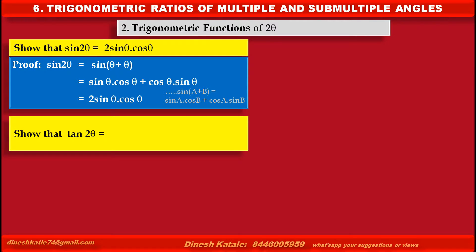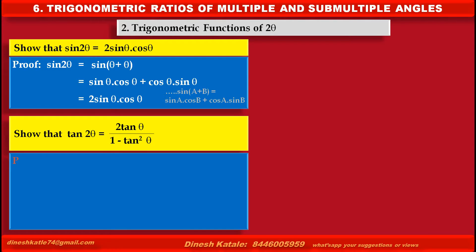So that tan 2 theta is equal to 2 tan theta upon 1 minus tan square theta. Proof. tan 2 theta equals tan theta plus theta. By using the formula tan A plus B equals tan A plus tan B upon 1 minus tan A tan B, we can write this as tan theta plus tan theta upon 1 minus tan theta into tan theta, since the values of A and B are theta.